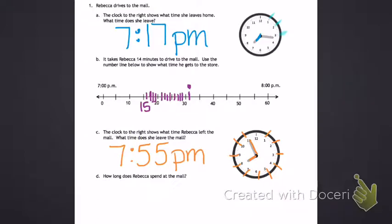So Rebecca left the mall at 7:55 p.m. I can also check it's p.m. with these marks on my number line. That reminds me that it is p.m.